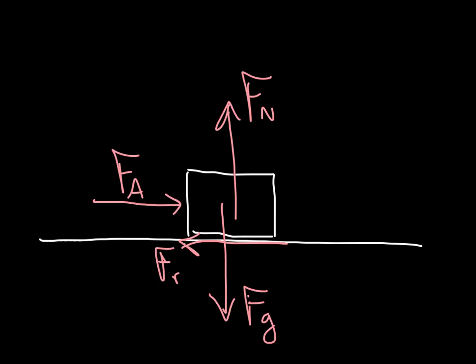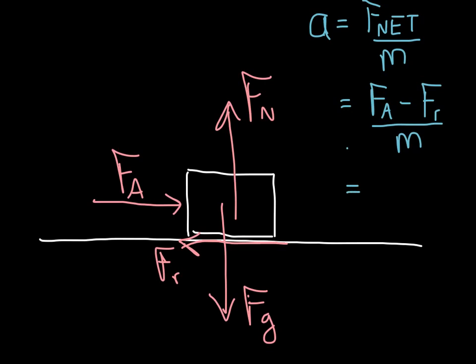So to continue on, we want to know what the acceleration is going to be. We have to determine what the net force is and divide by the mass of the box. So the net force is the applied force minus the friction force, divided by the mass of the box.